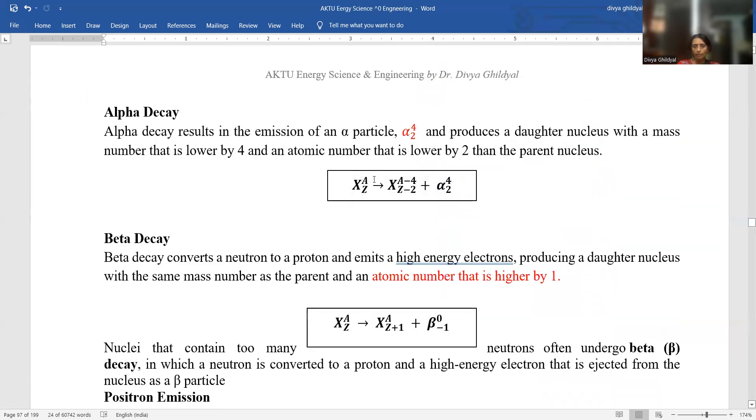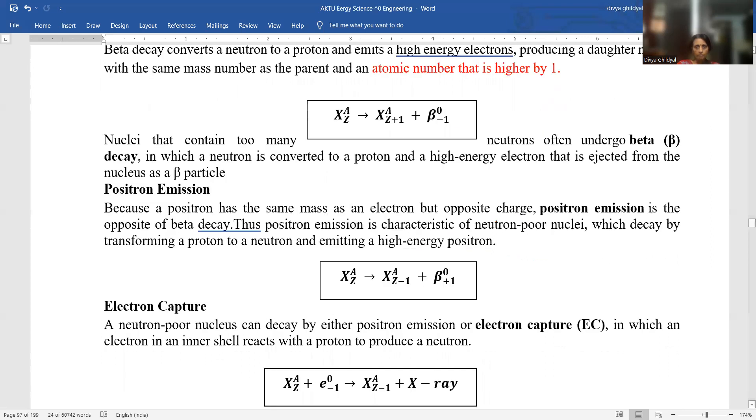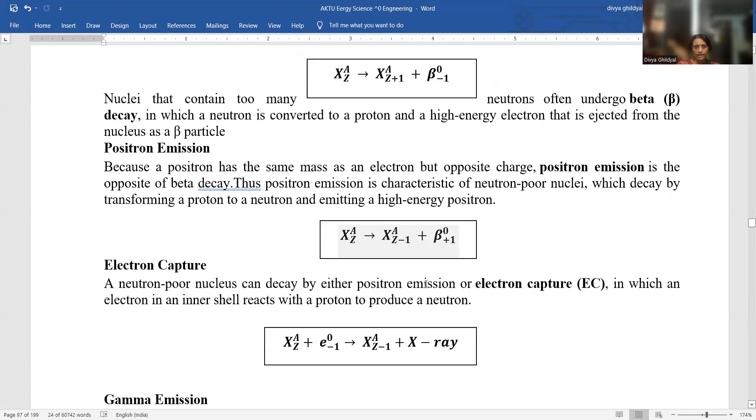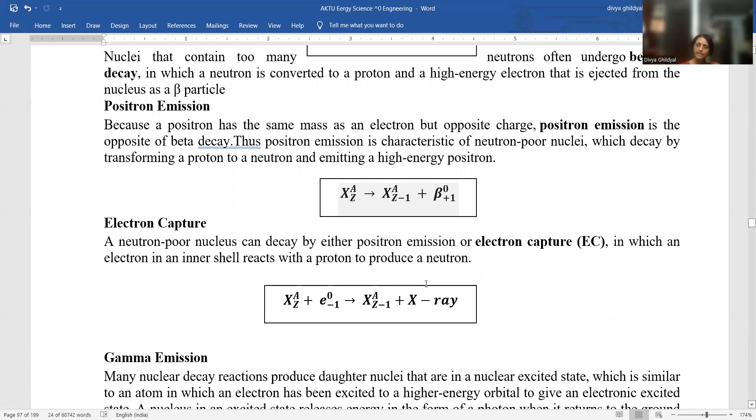Alpha decay, you have to memorize these equations. If the atom is having an atomic number of z and mass number of a and alpha particle has been emitted, then mass number will decrease by 4 and atomic number will decrease by 2, giving rise to the decay of alpha particles. Beta decay, the atomic number is going to be higher than 1. In positron emission, the opposite of beta decay. Electron capture, a neutron poor nucleus can decay by either positron emission or electron capture, in which an electron in an inner shell reacts with a proton to produce a neutron.